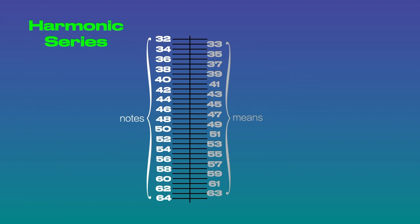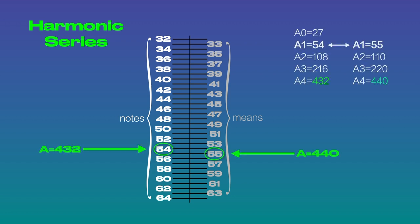As I've said in earlier videos and in my book The Next Octave, there's one major discrepancy between A at 432 and the standard A at 440 that's rarely if ever acknowledged. In the harmonic series, A432 is a note and A440 is a mean — a microtone between notes.